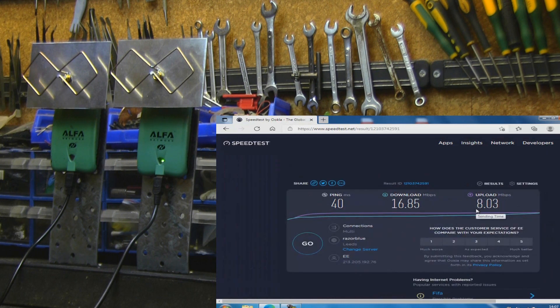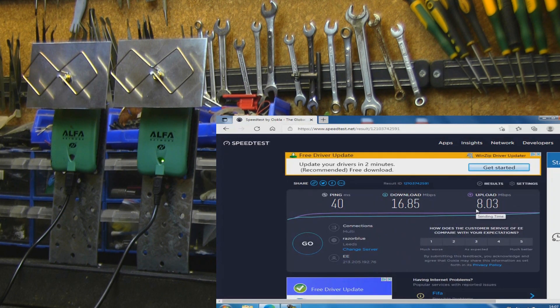So we've got 16 for download, 16.85, and 8.03 for upload. So let's give it a go with the other one and see if we see any difference.